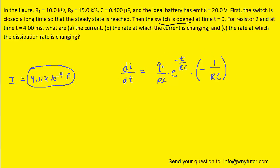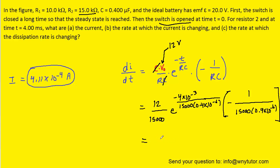This equation allows us to solve for di/dt. We note that Q0, the original charge on the capacitor, equals capacitance times the initial voltage, so we make that substitution and cancel the capacitance from numerator and denominator. Plugging in the initial voltage of 12 volts, time of 4 milliseconds, resistance R2 of 15,000 ohms, and the capacitance, we get approximately negative 0.0685 amps per second. This is the correct answer to part B.